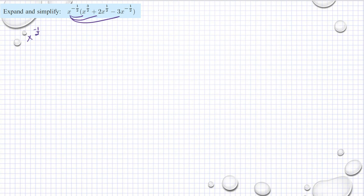Here, expand and simplify. That means we're going to multiply x raised to negative one-half to all of the terms. So we have x^(-1/2) multiplied by 2x^(1/2), subtracted by x^(-1/2) multiplied by 3x^(-1/2).